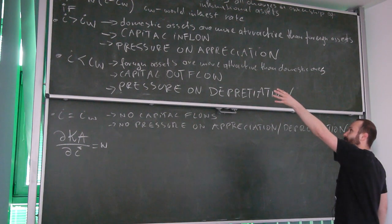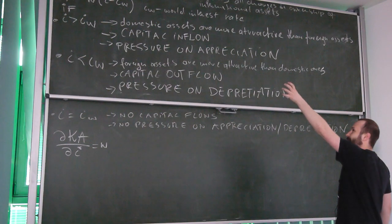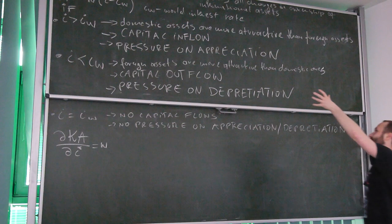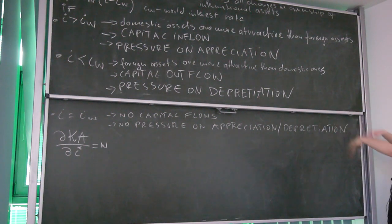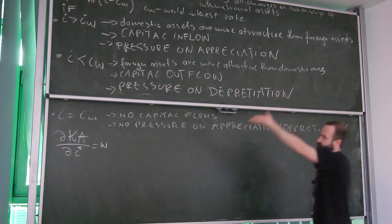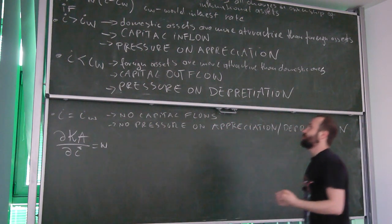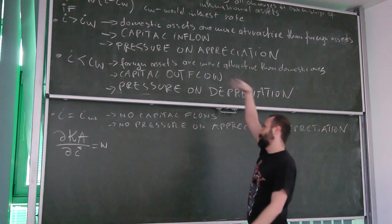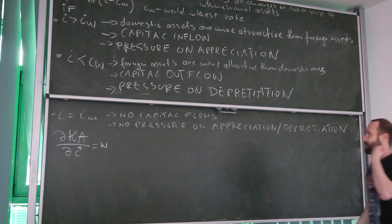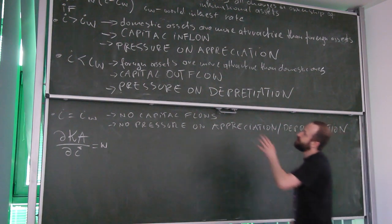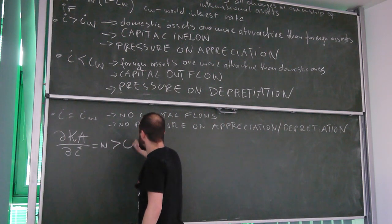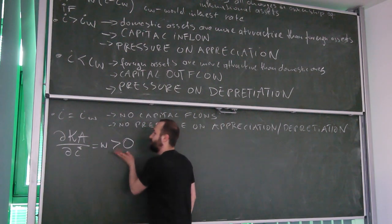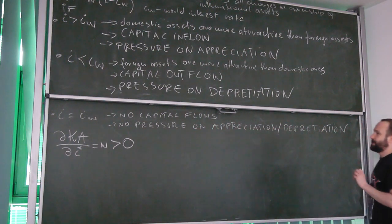When our interest rate is higher, we should have capital inflow, so the capital account should be in surplus. If the foreign interest rate is higher, our capital account should be in deficit. If the interest rate in our country is bigger, it's in surplus. This derivative must be greater than zero.